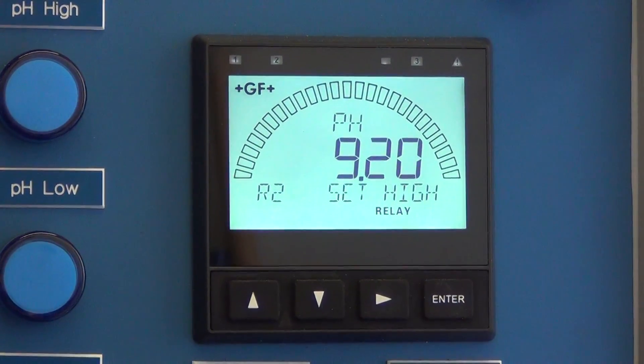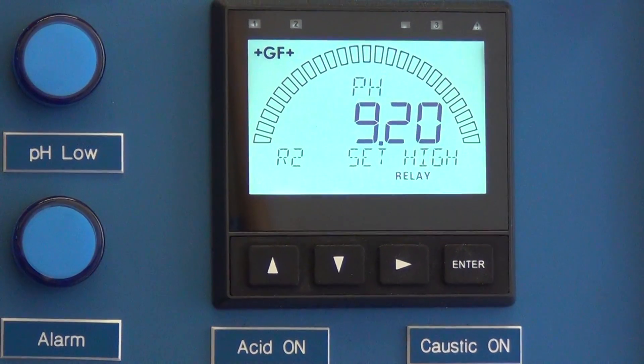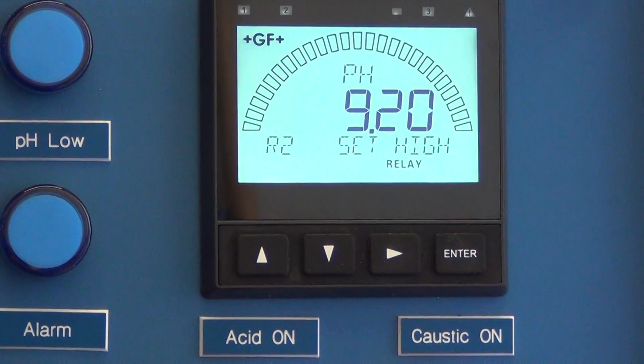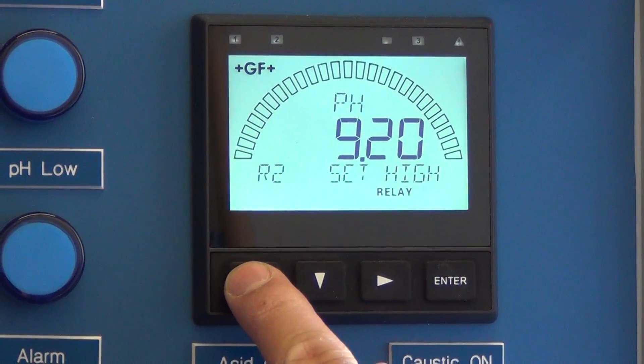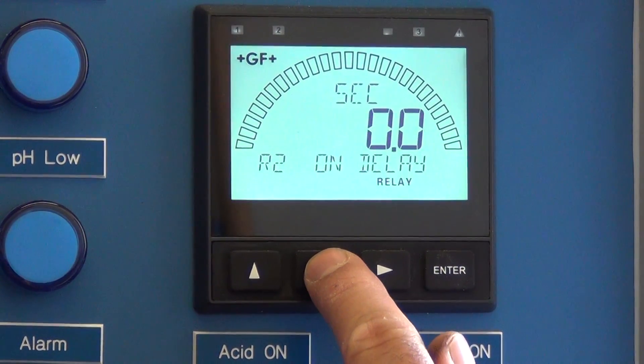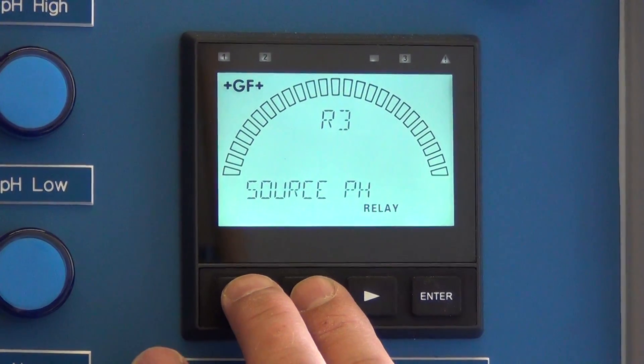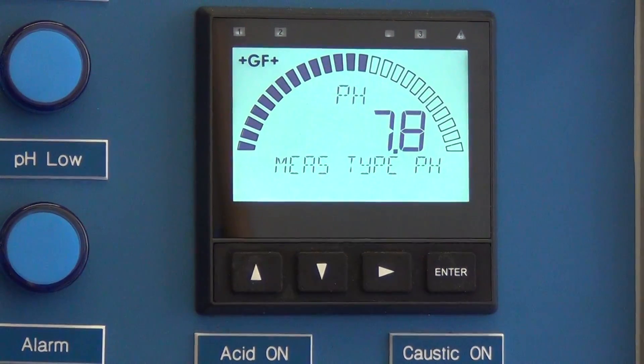If you're finished with all of the pH settings, you press and hold the up and down arrows at the same time. If you want to go and make other changes, you can use up or down to check which setting you want. I'm finished now, so I'm going to press up and down twice to get back to the main menu.